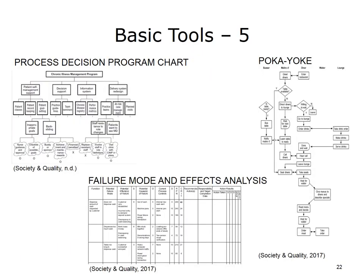The Process Decision Program Chart is a type of contingency plan that guides the efforts of a team when things do not turn out as expected. The actions to be completed are listed, then possible scenarios about problems that could occur are developed. Management decides in advance which measures will be taken to solve those problems should they occur. This chart can be helpful when a procedure is new and little or no experience is available to predict what might go wrong.